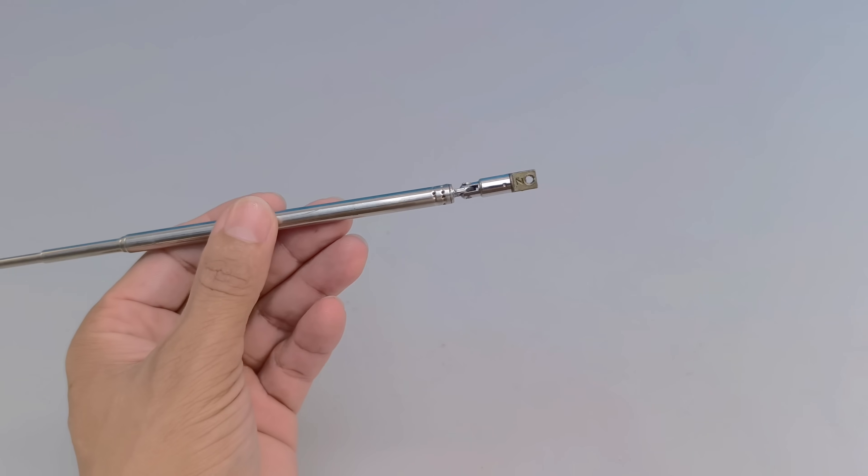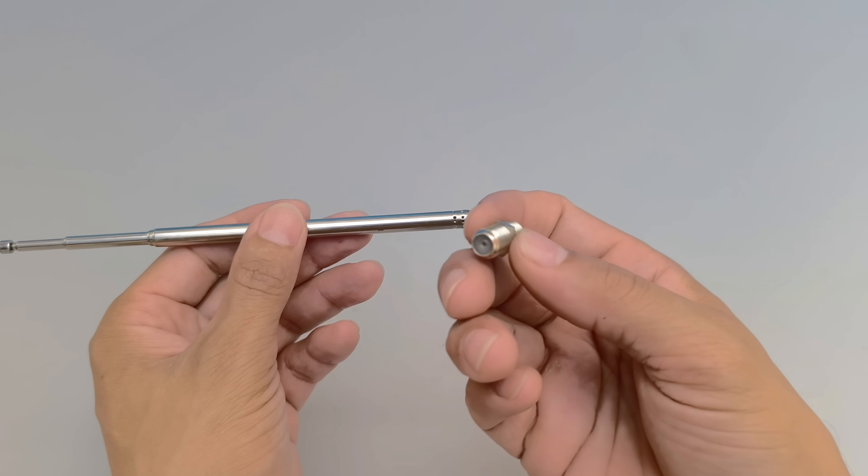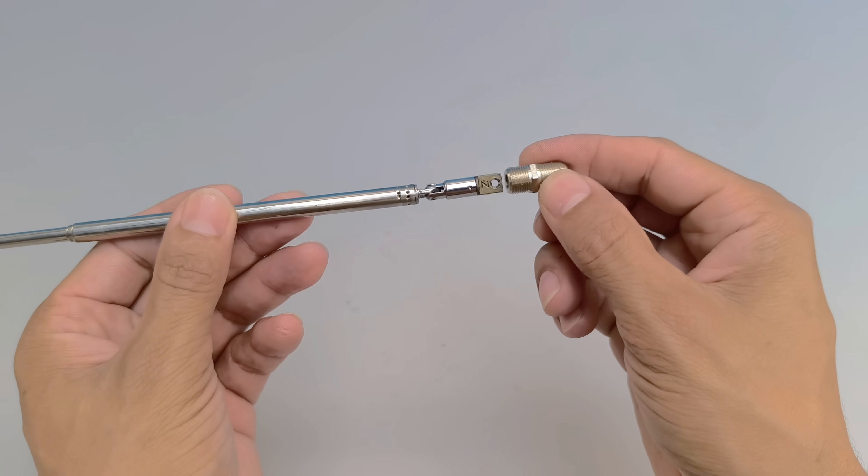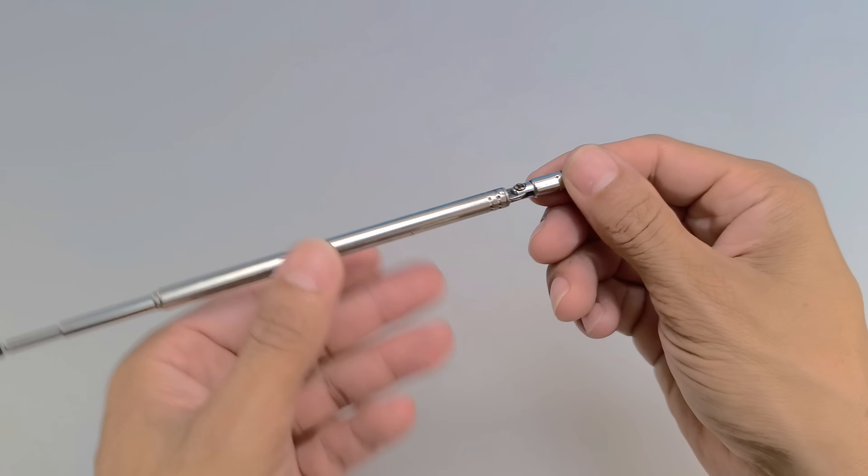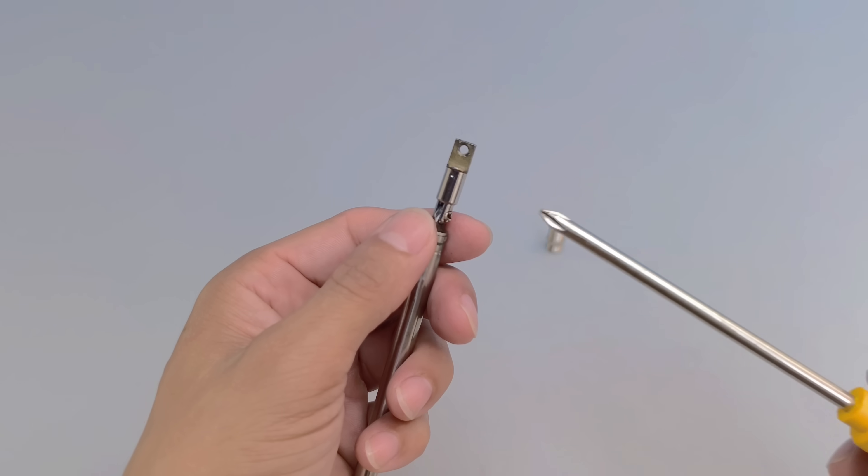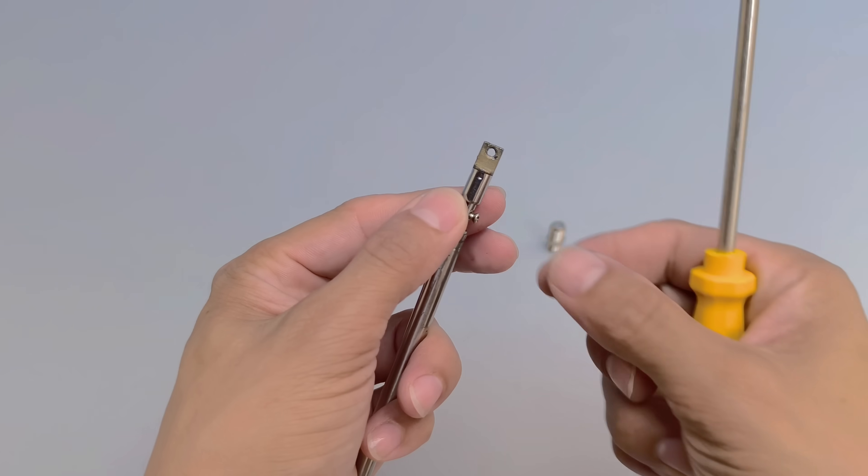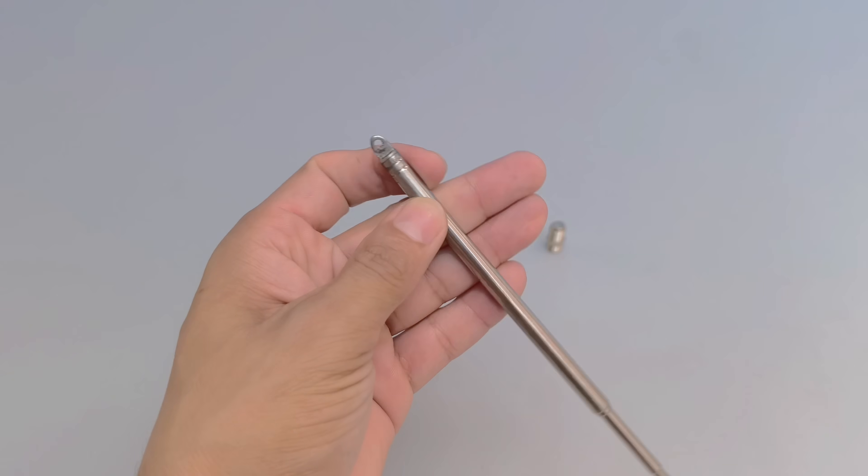Next, we will use a coaxial splice connector, which will be carefully adapted to function as a structural support and also as an electrical connection interface for the antenna, ensuring both physical stability and efficiency in signal transmission and conduction within the system.